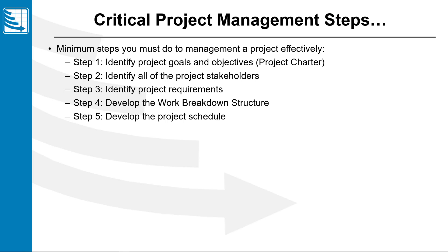Step one: we're going to identify the project goals and objectives and capture that in a project charter. Step two: we're going to identify the project stakeholders — the people, groups, and agencies that are impacted by the project. Step three: we're going to identify the project requirements — what does the project have to do? Step four: we're going to develop the work breakdown structure, which is the collection of all the scope of the project. And then step five: we're going to use all of these first four to develop the project schedule. If you don't do these at a minimum, you're going to have a hard time managing your project.